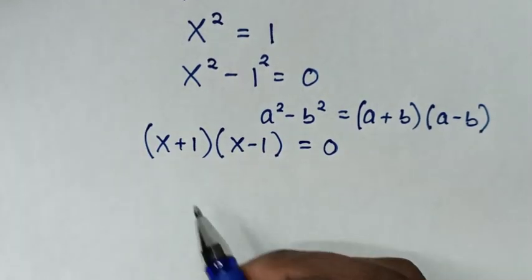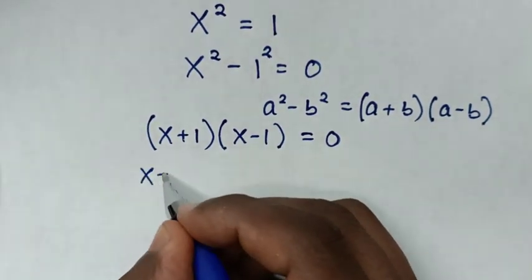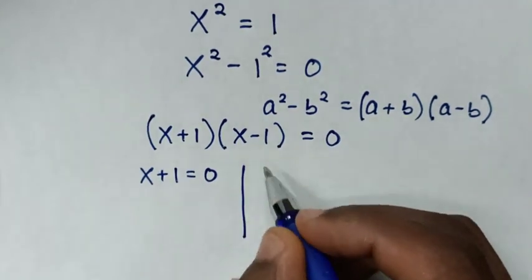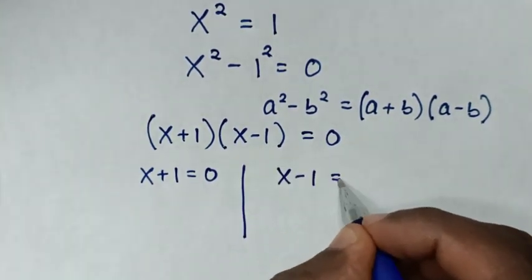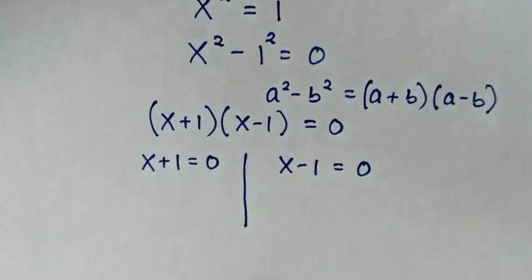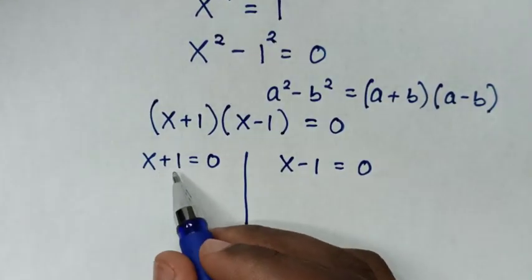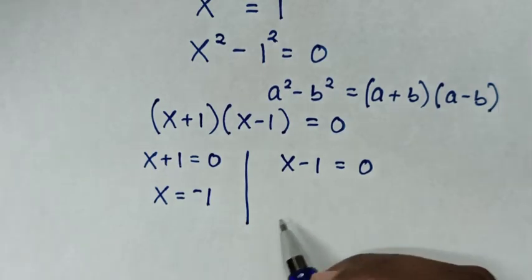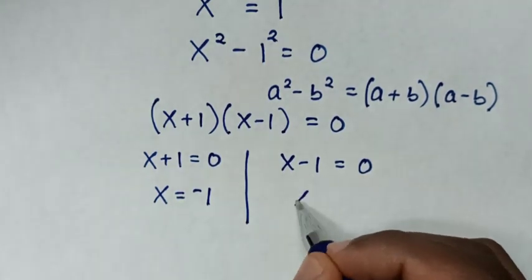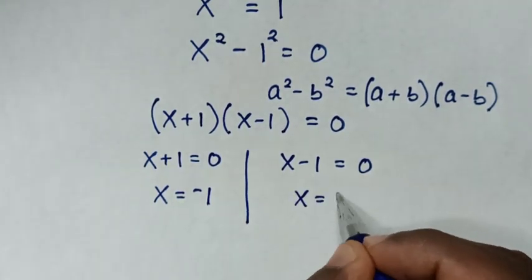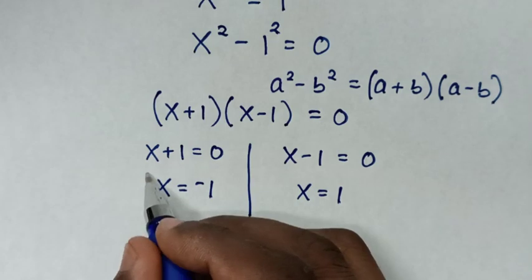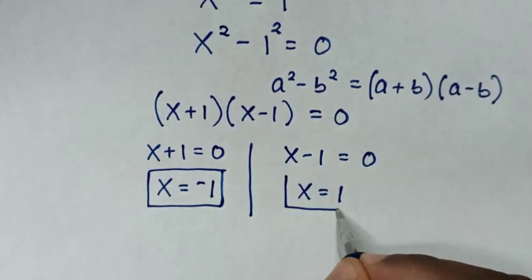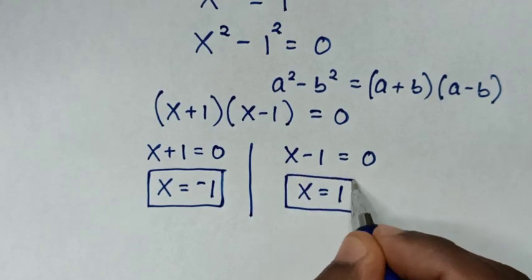Then in here we have two solutions: the first solution x plus 1 is equal to 0, and the second solution x minus 1 is equal to 0. Then we take 1 to the right side so it will be x is equal to negative 1, and here we take negative 1 to the right side so it will be x is equal to 1. Therefore, the first value of x is negative 1 and the second value of x is 1.